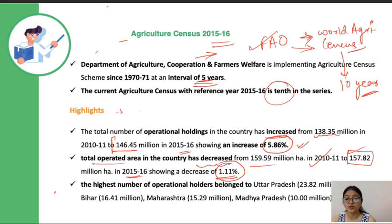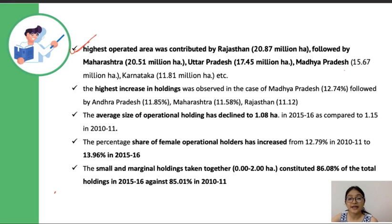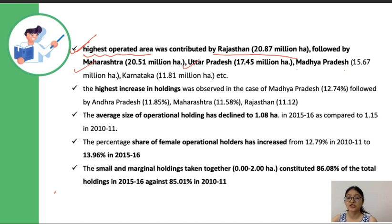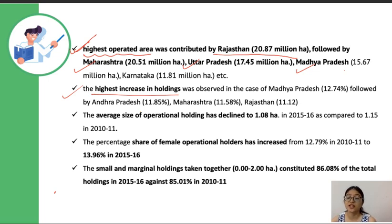The highest number of Operational Holders belong to Uttar Pradesh, followed by Bihar, Maharashtra, and Madhya Pradesh. The highest operated area was contributed by Rajasthan, with 20.87 million hectares, followed by Maharashtra, Uttar Pradesh, and Madhya Pradesh. The highest increase in operational holdings was in Madhya Pradesh at 12.74%, followed by Andhra Pradesh, Maharashtra, and Rajasthan.